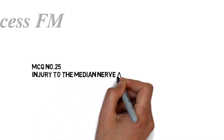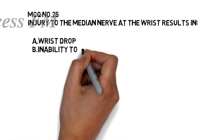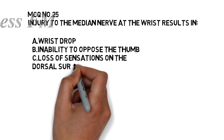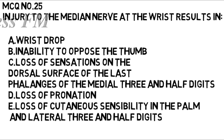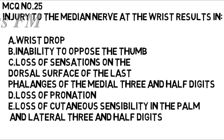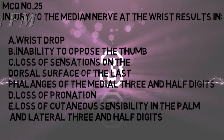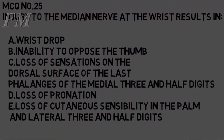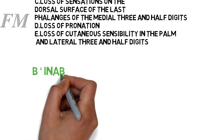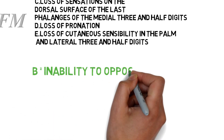Question number 25 is about injury to the median nerve at the wrist joint. Option A is drop wrist. Option B is inability to oppose the thumb. Option C is loss of sensation in the dorsal surface of the last phalanges of the medial three and half digits. Option D is loss of pronation. Option E is loss of cutaneous sensibility in the palm and lateral three and half digits.